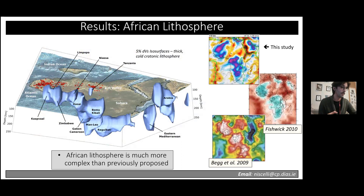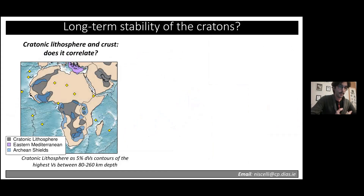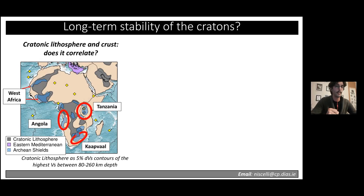This complexity is particularly evident when comparing our model with previous work — not only are there several independent units, but these units also have substantially different depth extents, as seen from the 3D rendering. When comparing our cratonic lithosphere contours to Archean shields from surface geology, while there is generally good correlation, there are certain areas — mainly in West Africa, Angola, Tanzania, and southeastern Kapval — where we have Archean crust but do not observe a thick lithosphere underneath.